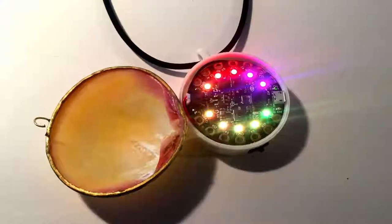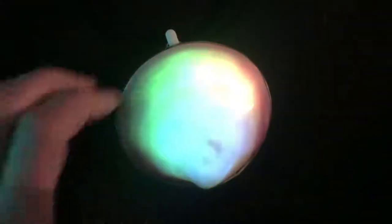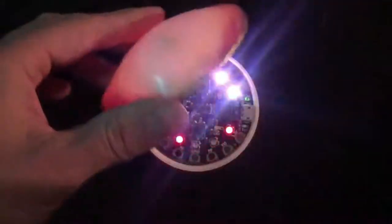A 3D printed enclosure holds the Circuit Playground in place. The necklace opens like a locket. Press the left button on the Circuit Playground to choose a color palette.